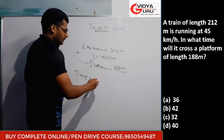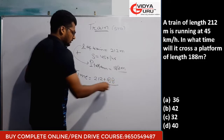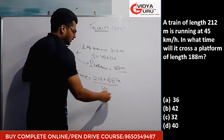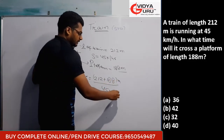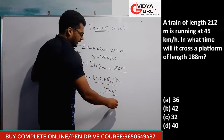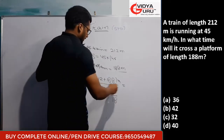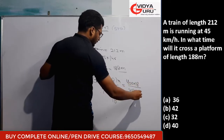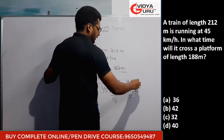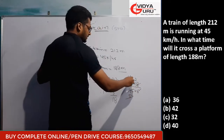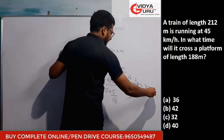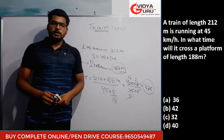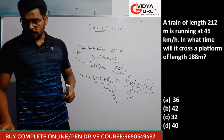Total distance to be covered is 212 + 188 = 400 meters. Speed is 45 km/h. To convert to m/s, multiply by 5/18: 45 × 5/18 = 12.5 m/s. Time = 400 / 12.5 = 32 seconds. So the train will cross the platform in 32 seconds.